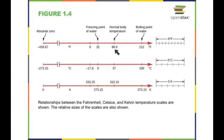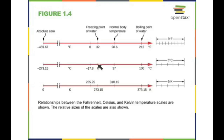The normal human body temperature is 98.6 Fahrenheit, which is 37 degrees Celsius, and that is 310.15 Kelvin. The freezing point of water is 32 on Fahrenheit, 0 on Celsius, and approximately 273 on Kelvin. The boiling point of water is 212, 100, and 373.